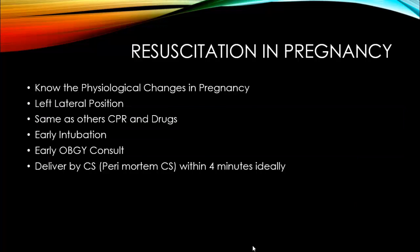Resuscitation in pregnancy: know the physiological changes that occur in pregnancy. Give them left lateral position so as to avoid compression of venous return. The drugs and doses are the same; the algorithms do not change. Early intubation is recommended to prevent aspiration. Early OBGYN consult should be done and deliver the baby by caesarean section. Perimortem caesarean section is recommended within 4 minutes ideally, in order to save the life of the mother and or the baby if the baby is beyond the viable age group.